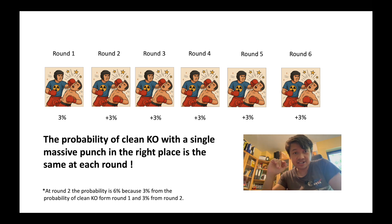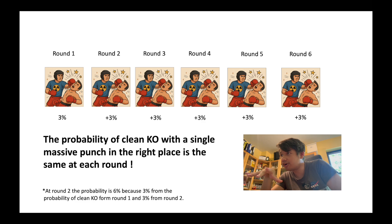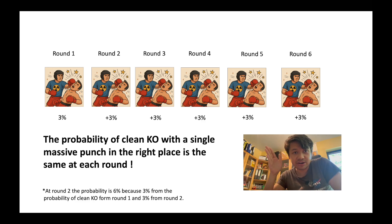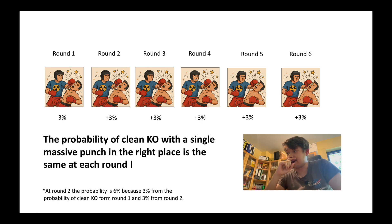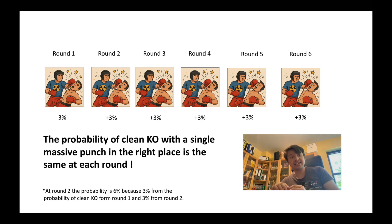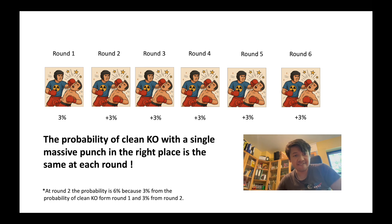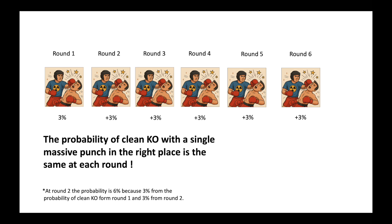It doesn't depend on how exhausted you are, so even in the very first round you can have a clean knockout. This is exactly the same for cell killing: the alpha killing always has the same probability. This is completely different for the beta killing.